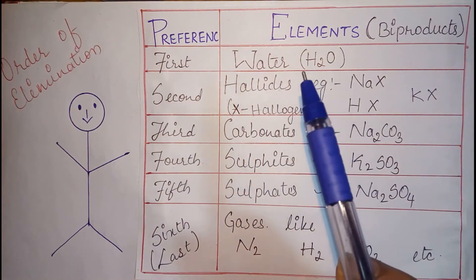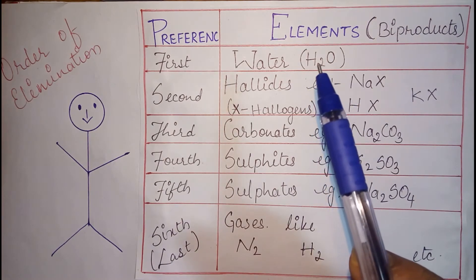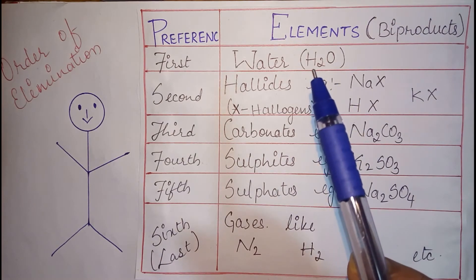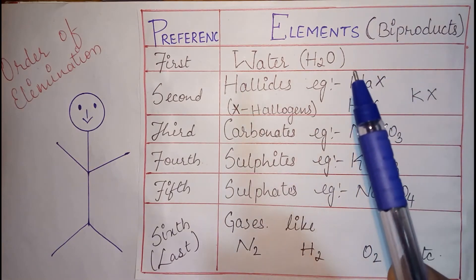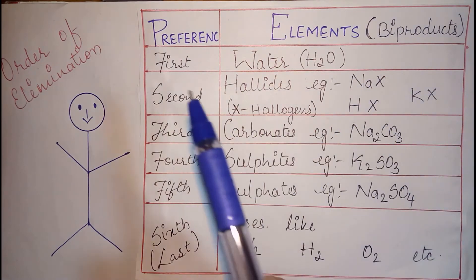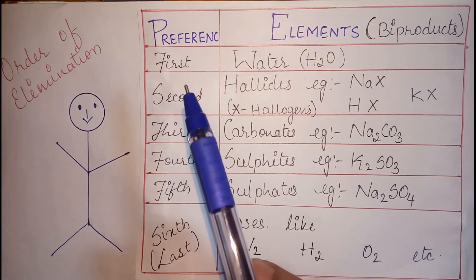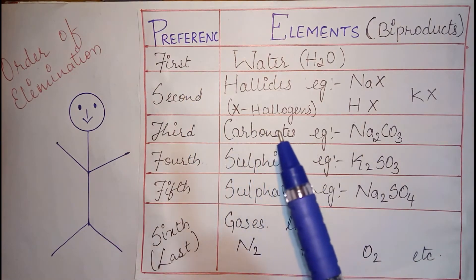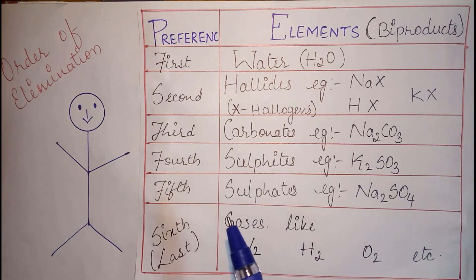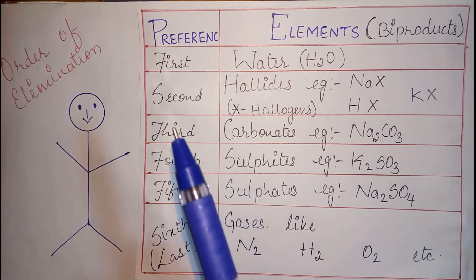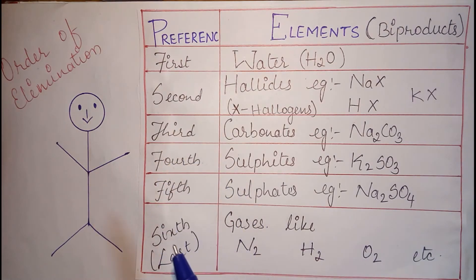If water forming molecules are not present in the terminal position then check whether the terminal elements can give us halides or not which is our second preference. If not then you have to go for carbonates, sulphites, sulphates and lastly gases like hydrogen, nitrogen, oxygen etc which are our 3rd, 4th and 5th preferences respectively.